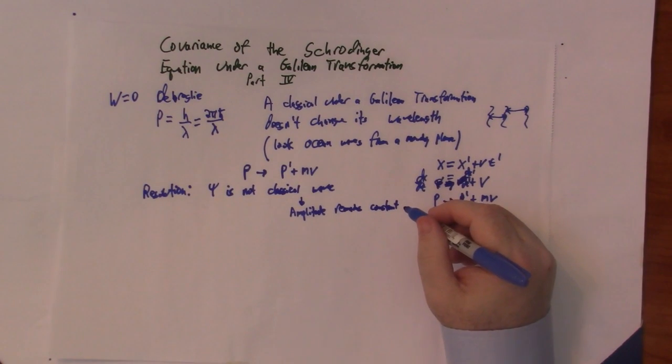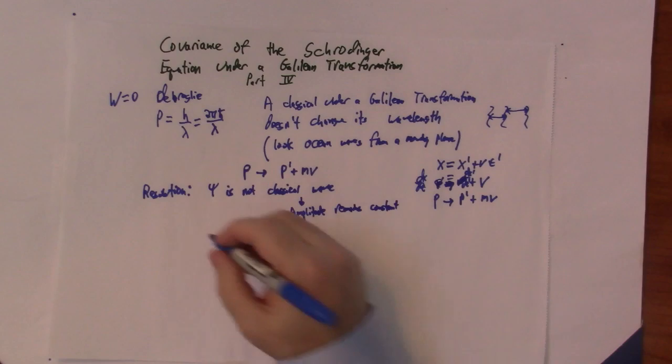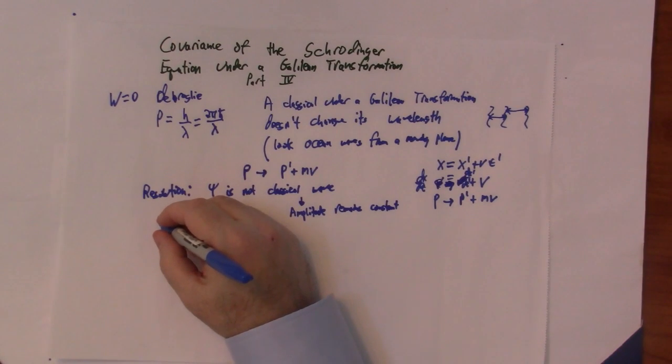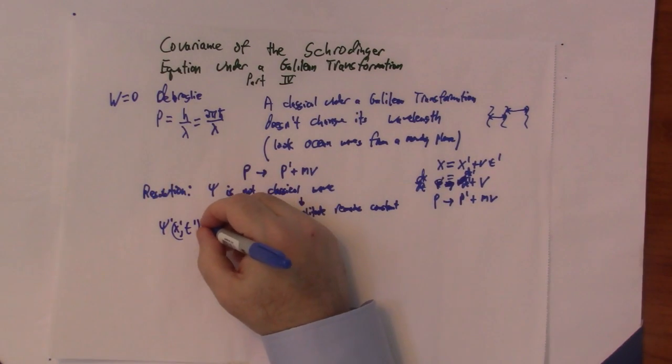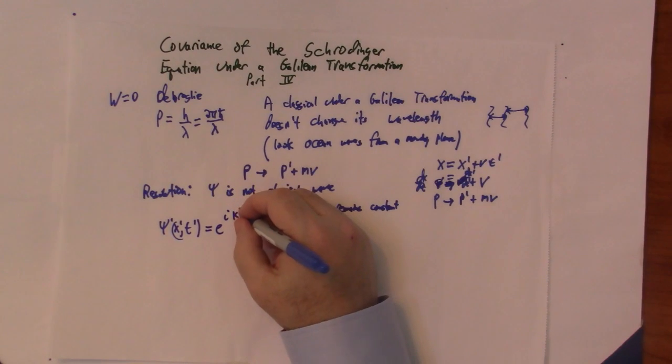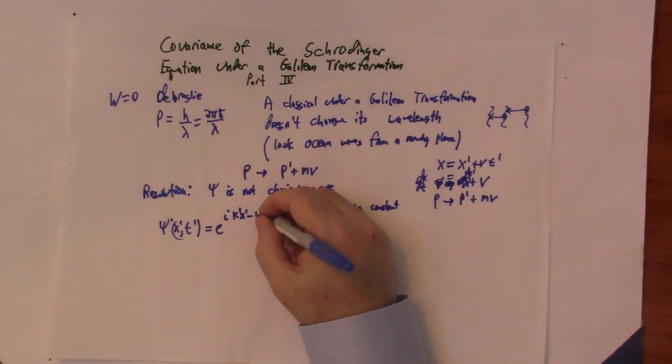So, the way to think about it is, let's say we have a wave in the prime system, free particle wave. That's all we're dealing with, it's free particles here. That's why I said w equals zero. Let's say we have psi prime of x prime, comma t prime, is equal to e to the i k prime x prime minus omega prime t prime.